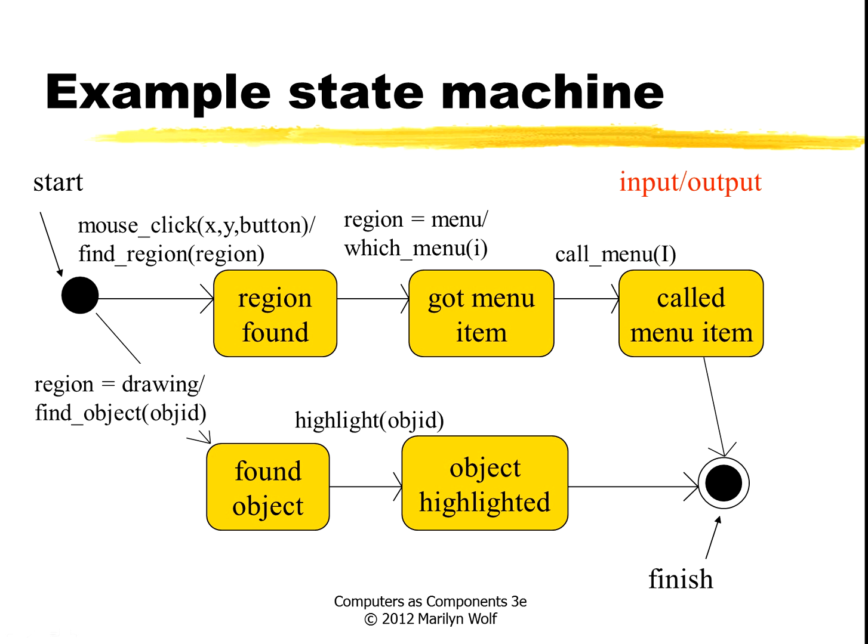So here's an example of a state machine. This black dot is the start state. The black dot with a circle around it is the finish state. So from the start, we can do two different things. If we're in the drawing region, if the mouse is in the drawing region, then we go to found object here. And that makes us perform this call in this state to the highlight function, which is going to draw a highlight around that object in the screen. And then we've gone to the object highlighted state, and then we finish.